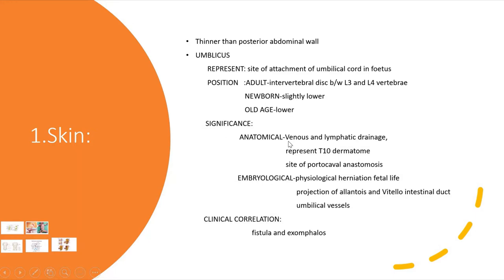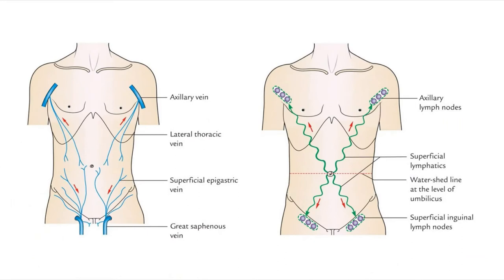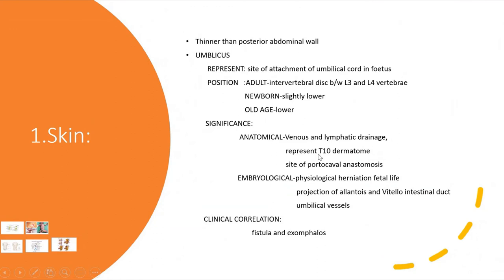Moving on to the significance of the umbilicus: anatomically, it serves as the watershed line for venous and lymphatic drainage. Above the level of the umbilicus, venous blood and lymph flow upward — venous blood is carried to the axillary vein and lymph drains to the axillary lymph nodes. Below the umbilicus, venous blood flows downward via the superficial epigastric vein to the great saphenous vein, and lymph drains to the superficial inguinal lymph nodes.